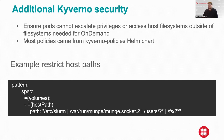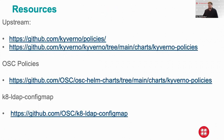Most of the other policies we use come from the upstream Kyverno policies Helm chart, and these are mostly around security. Some of the ones I showed are custom ones. Here are some resources: upstream policies for Kyverno, the OSD policies that we deploy with Helm, and a link to the k-ldap-config-map, which is how we get the LDAP data available to Kyverno.